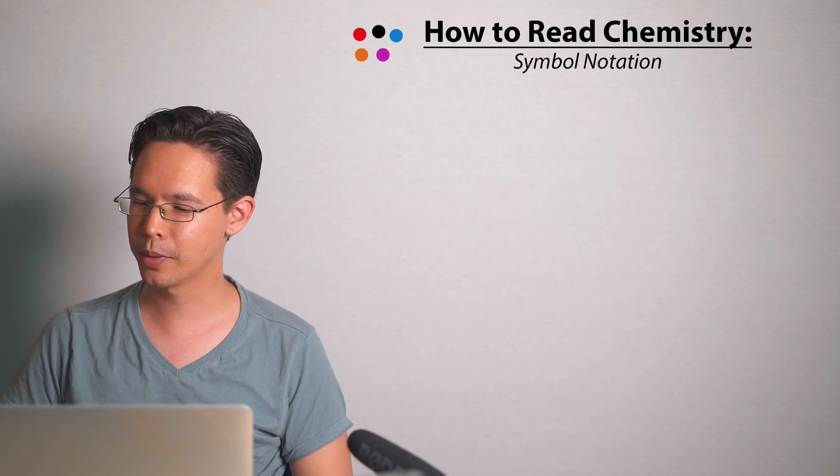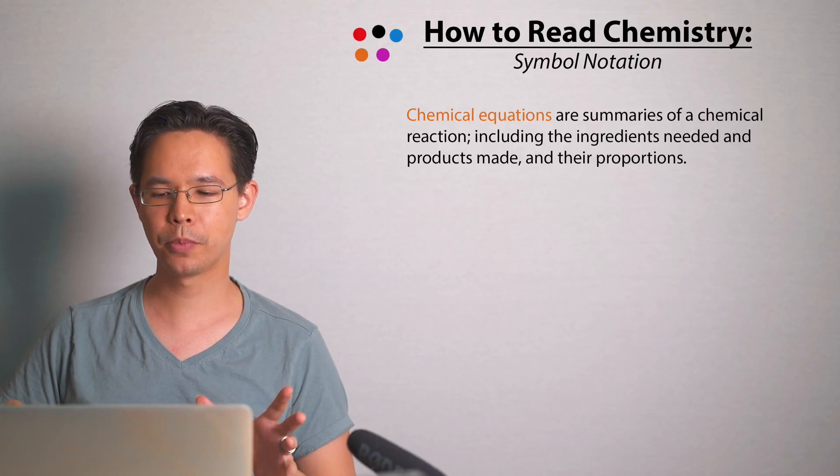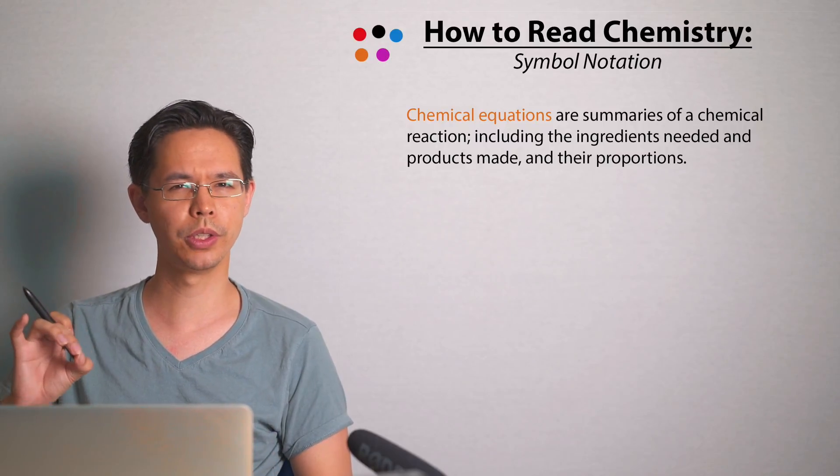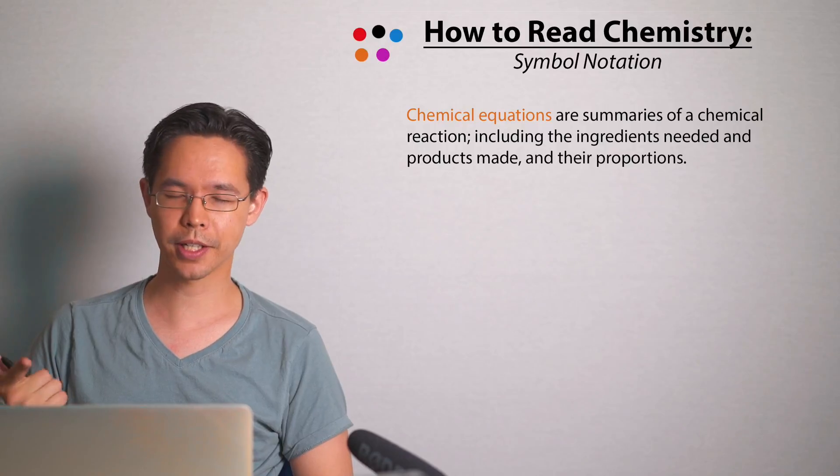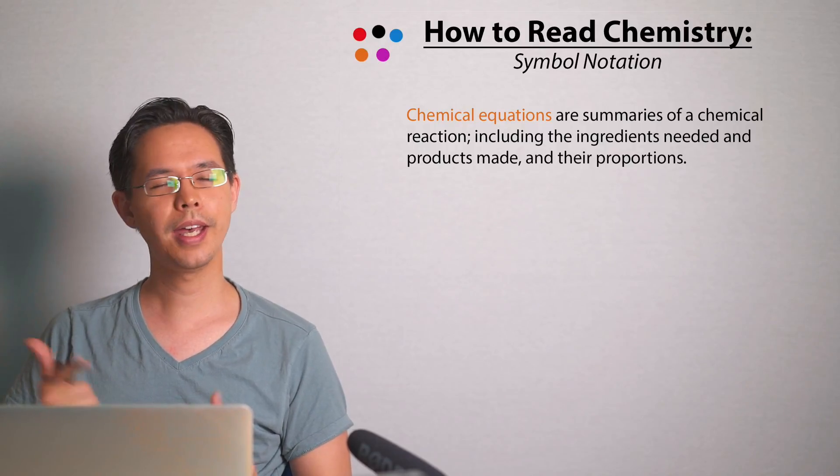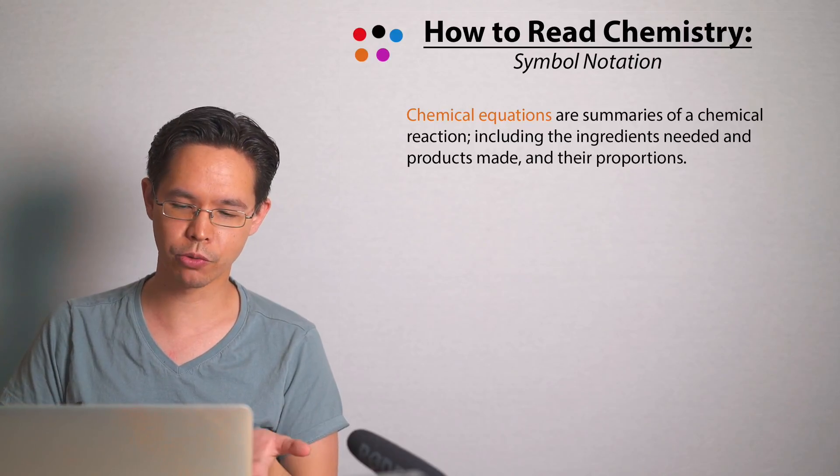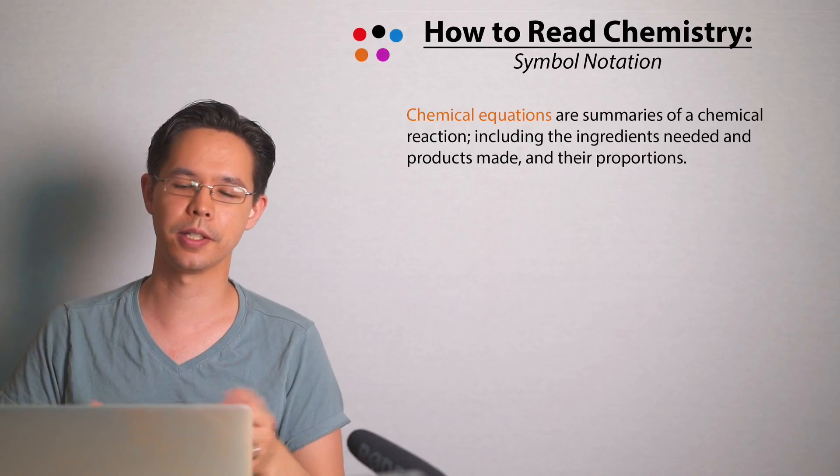So let me show you what I mean. What is a chemical equation? A chemical equation is a summary of the chemical reactions that we have and this will include information about the ingredients that you start off with and the products that are made afterwards and their relative proportions. I'm using the words ingredients and it's not the chemistry terminology but I think it gives you the idea.